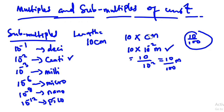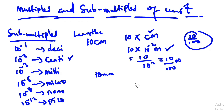Similarly, for 3 millimeters — milli is 10 to the power negative 3 — so we have 3 × 10⁻³ meters. It is already in meters now.